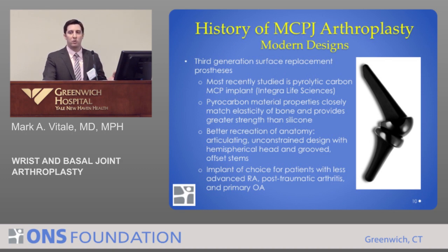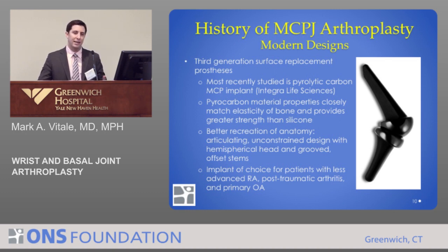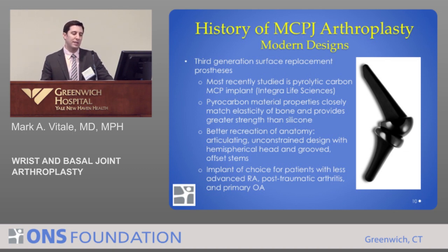Today there are modern designs based on the surface replacement concept. The most recently studied is the pyrolytic carbon MCP implant, which attempts to more naturally recreate the anatomy of the MCP joint. It's made of a material called pyrocarbon, which has a modulus of elasticity that more closely matches bone, so in theory it may subside less and have fewer problems. It's a good option for patients with less advanced rheumatoid disease, post-traumatic arthritis, and primary osteoarthritis.